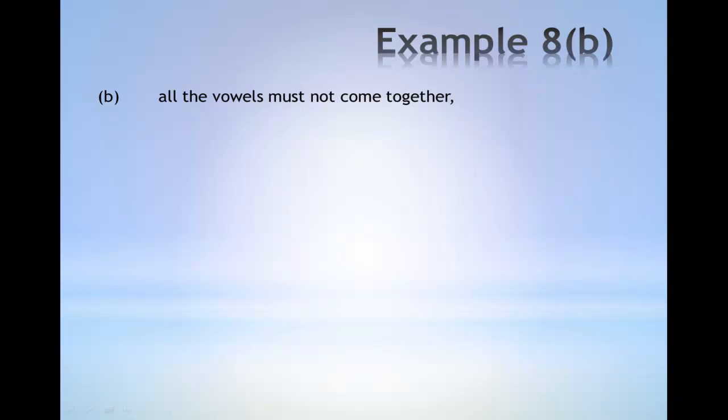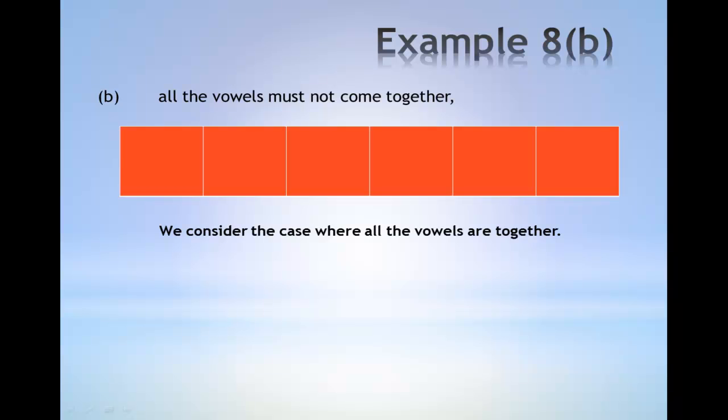In part B, all the vowels must not come together. We consider the case where all the vowels are now being grouped together. The vowels are A, E, U, I. They are grouped together as one unit.